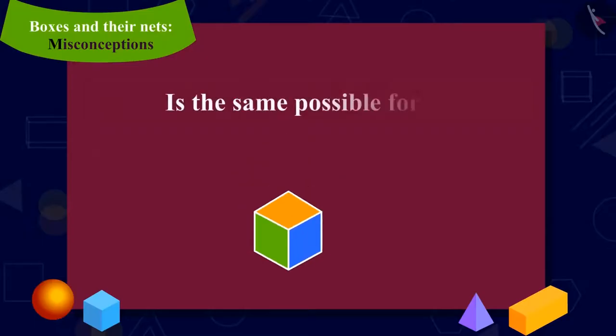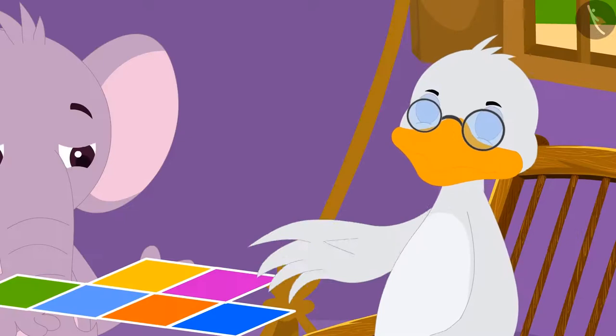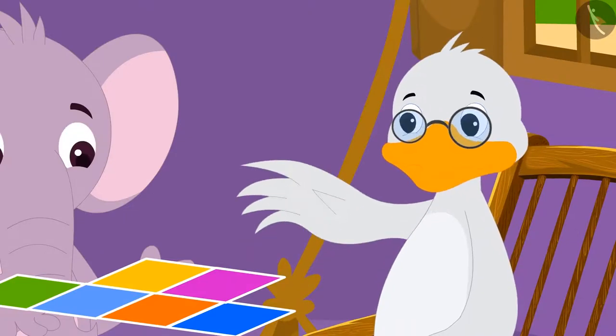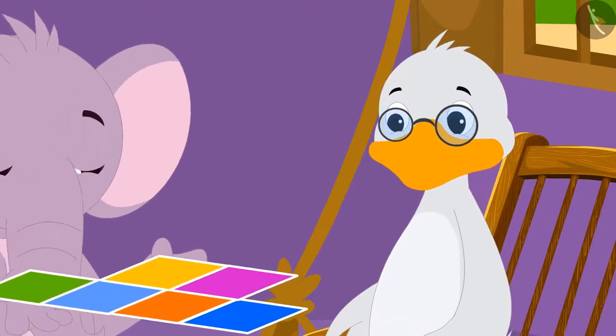Appu was shocked. He asked Babu uncle, is the same possible for the shape of a cube as well? Then Babu uncle made a shape like this on a thick paper and gave it to Appu. He asked Appu to fold this net. Now, let's see how Appu is folding it.